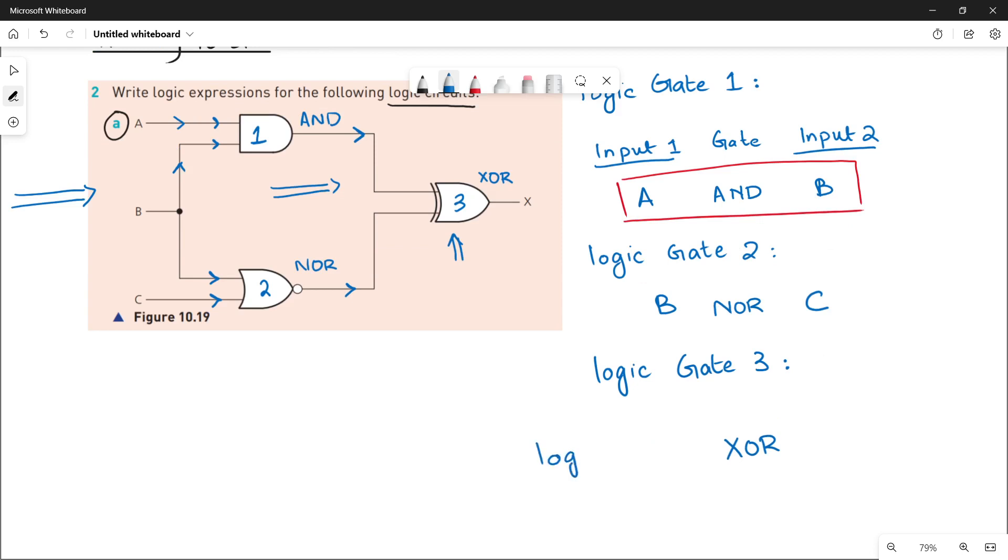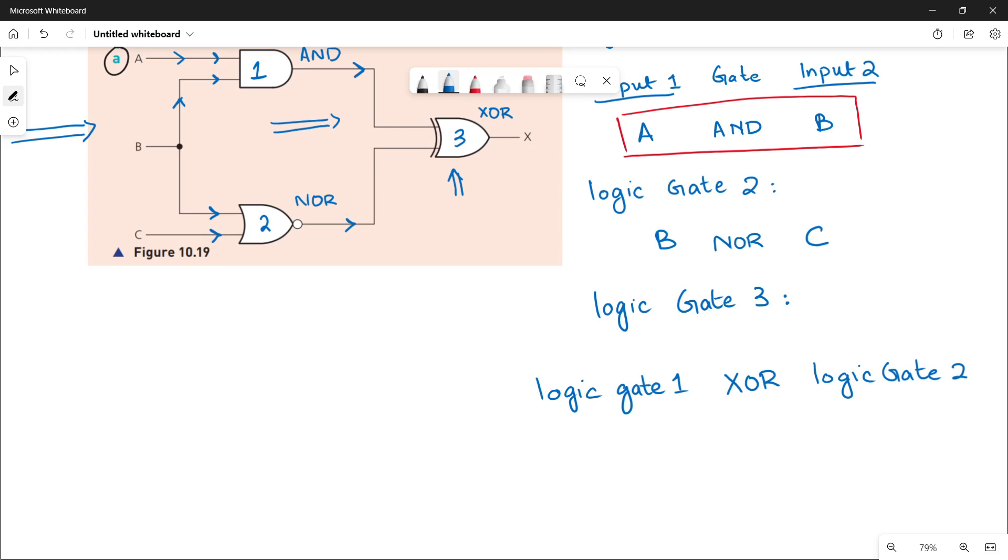So you can simply write logic gate 1 as your first input, and XOR is taking logic gate 2 as the second input value. So now finally what you will be doing, the expressions that you have already identified for logic gate 1 and logic gate 2 will be written or will be replaced here.